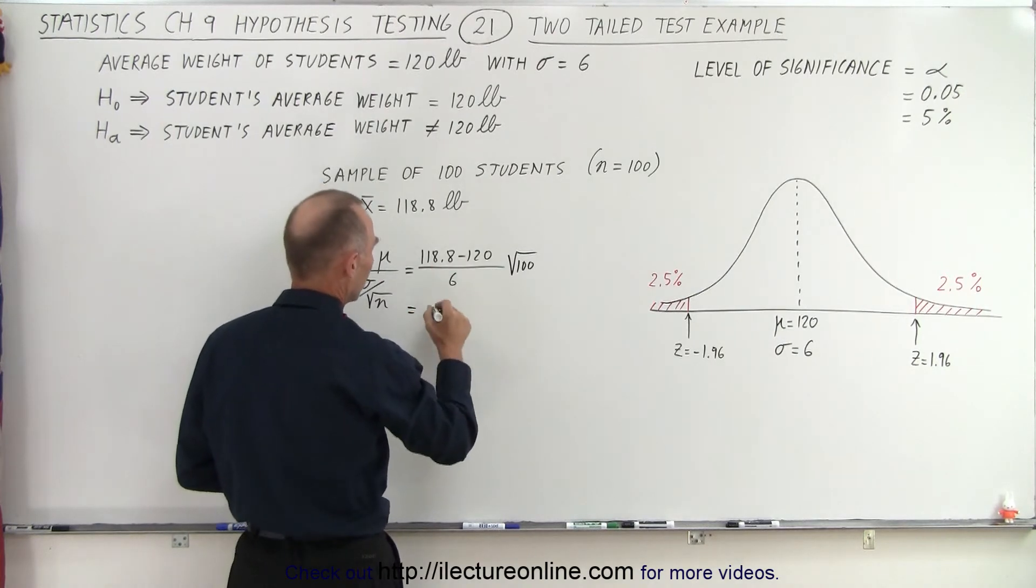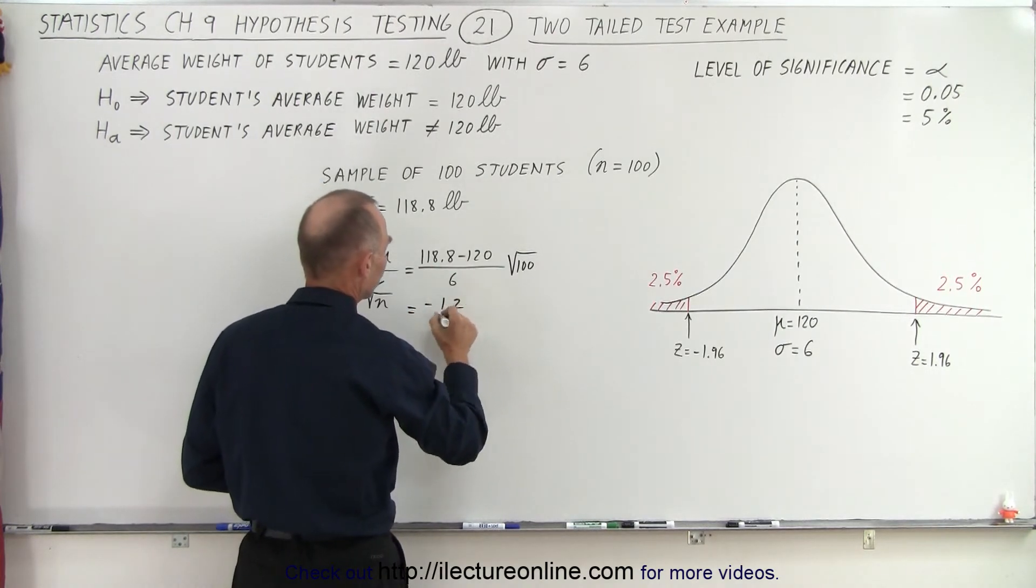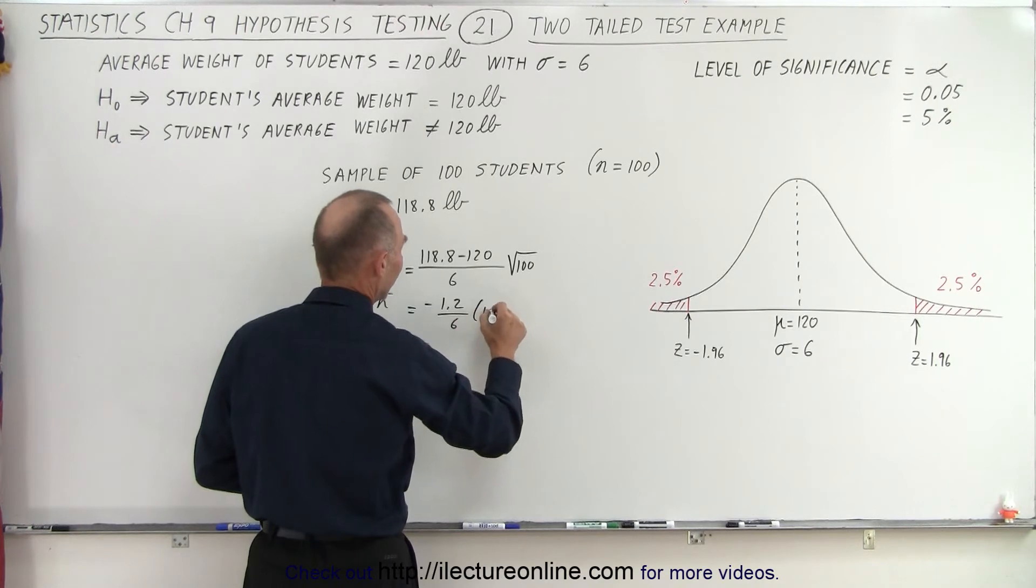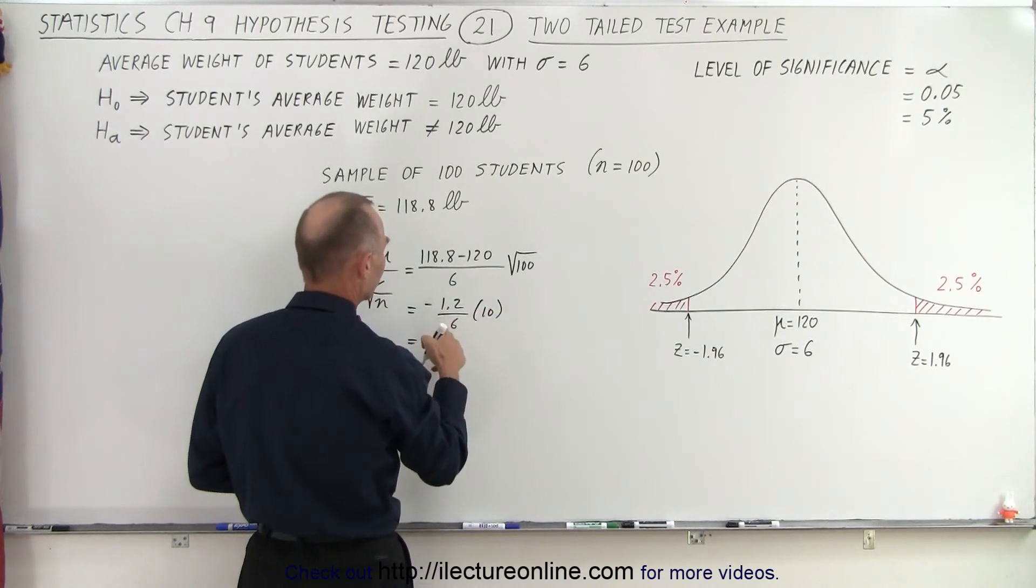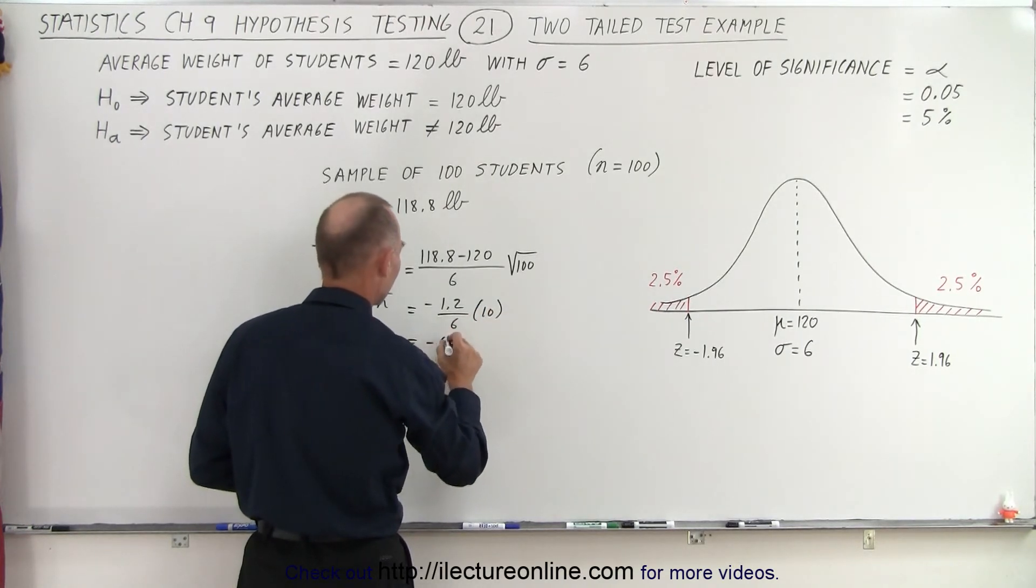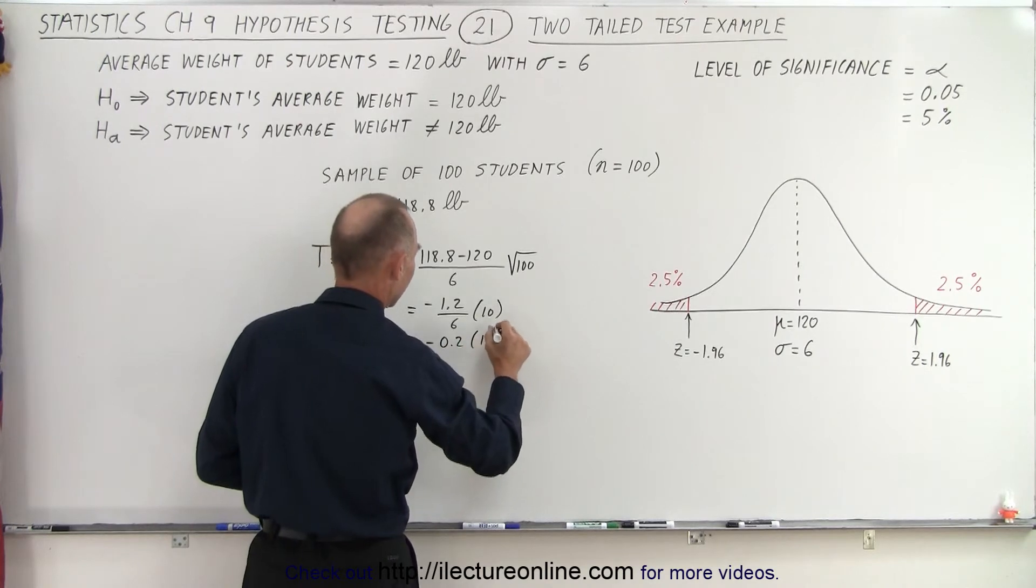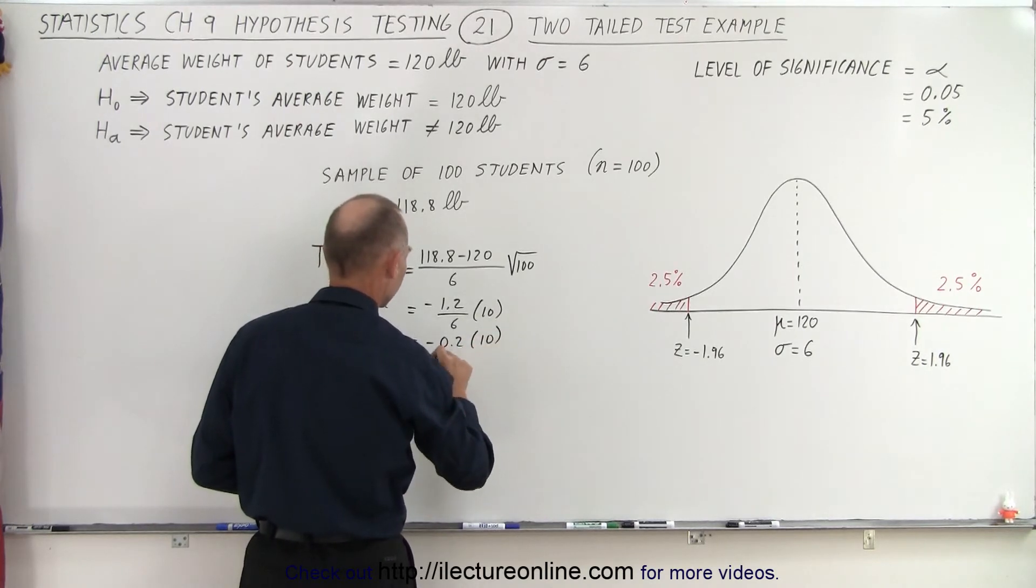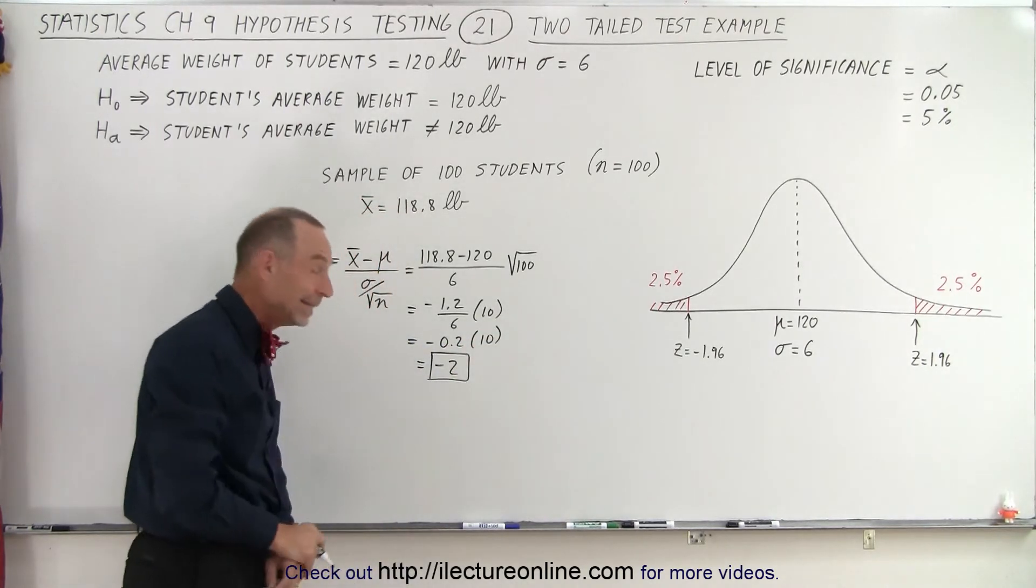So this is equal to negative 1.2 divided by 6 times 10. And so negative 1.2 divided by 6, that would be negative 0.2 times 10, which is equal to negative 2. Alright, negative 2.